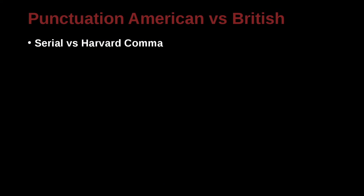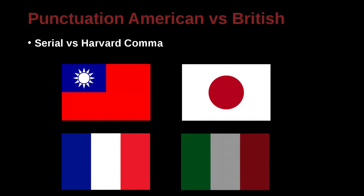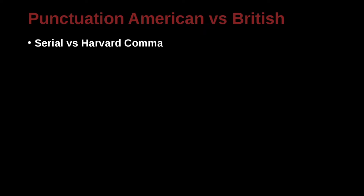Let's begin by looking at the basics, which is the comma — how to use the comma. It may be easy to say these things are really simple and everybody should know these ideas, but my experience is they're not that simple, especially since many of our learners have a different first language like Chinese, Japanese, or another European language. The comma usage and period usage may be different, especially for Chinese learners where the comma, period, and all other kinds of punctuation are really very differently used. So the first thing we need to look at is the serial versus the Harvard comma.